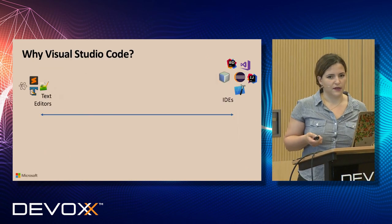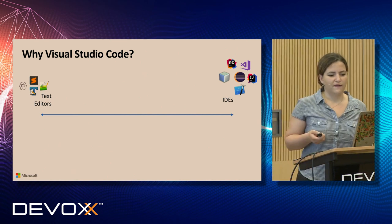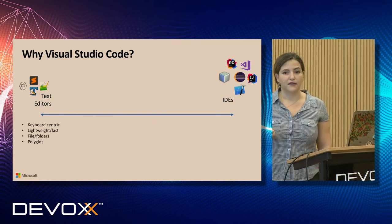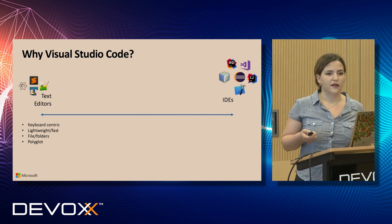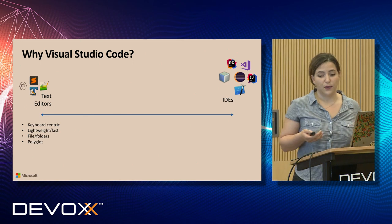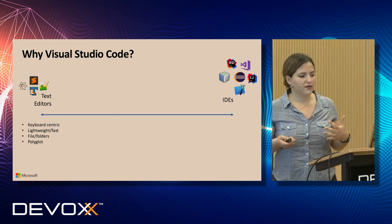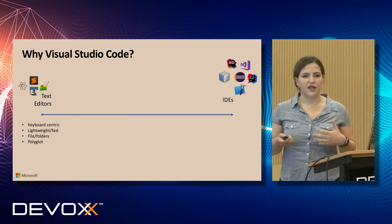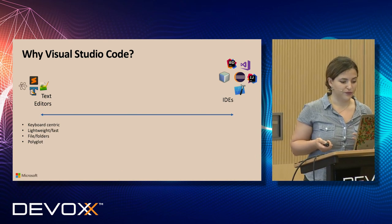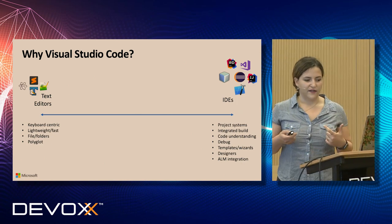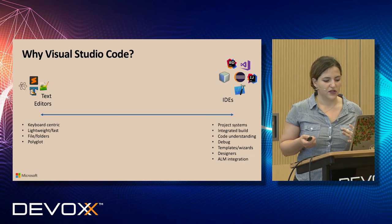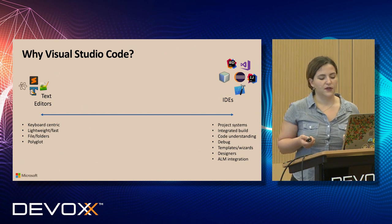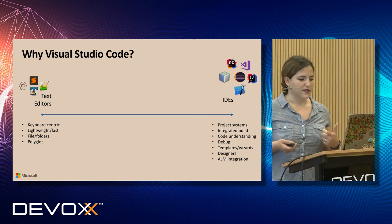But why Visual Studio? We have so many good IDEs, and Visual Studio is not an IDE. A text editor is keyboard-centric, lightweight, and doesn't have a lot of features — it mostly helps us work with files and folders. The main reason a lot of people use it is because it's polyglot, meaning we can develop in many different programming languages in the same editor without switching screens or tools. An IDE gives us the build system, the project system, the ability to debug, templates, wizards, and all kinds of designer integrations.